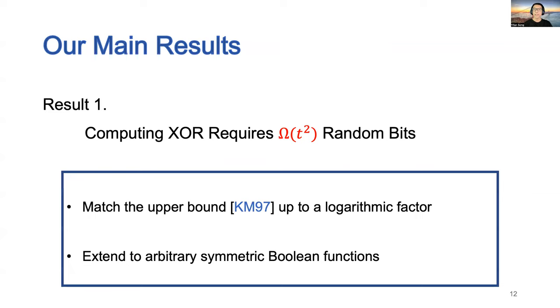Our first result shows that computing XOR requires at least Ω(t²) random bits, which matches the upper bound from KM97 up to a logarithmic factor. We show that the same lower bound applies for arbitrary symmetric boolean functions, such as the AND function and the majority function.